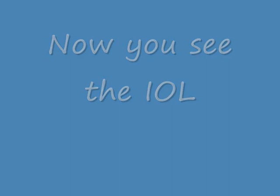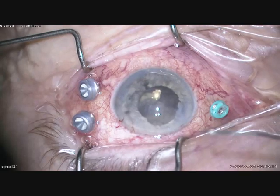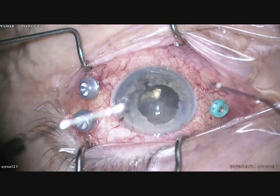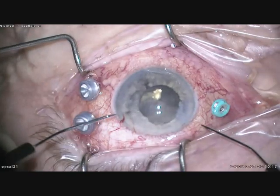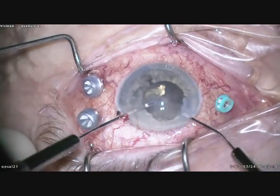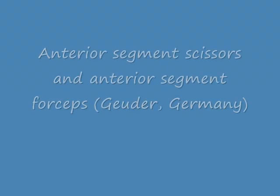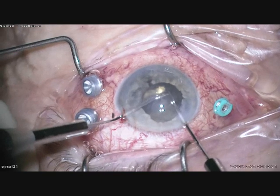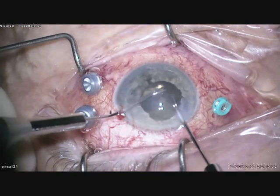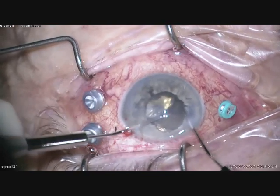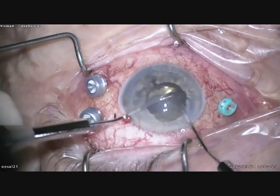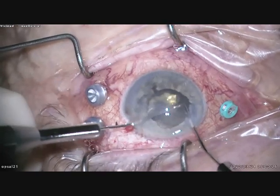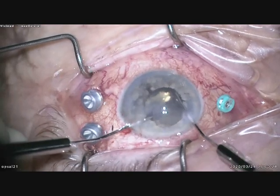Now you can also see the IOL. I'm using a Hattenbach iris forceps from Goida, Germany. With these two instruments the removal of the membrane is quite straightforward.